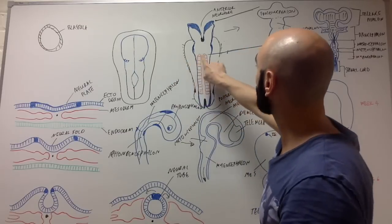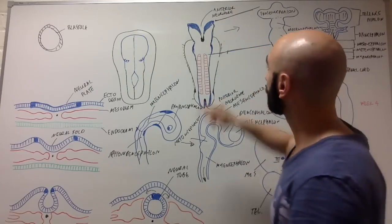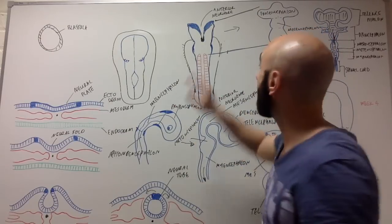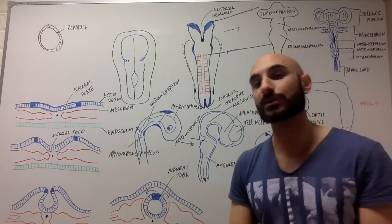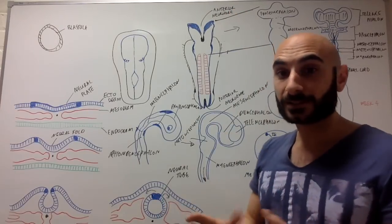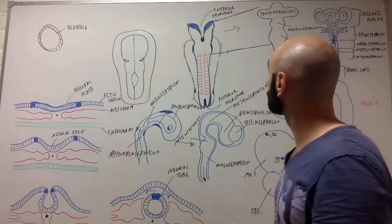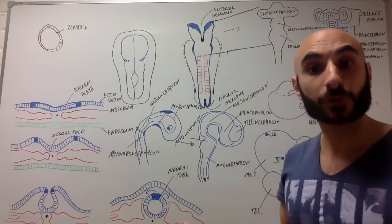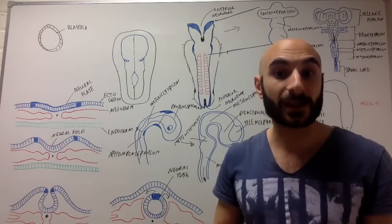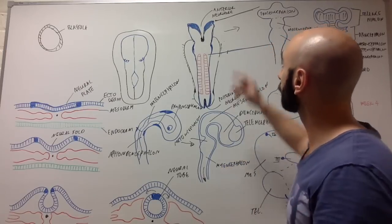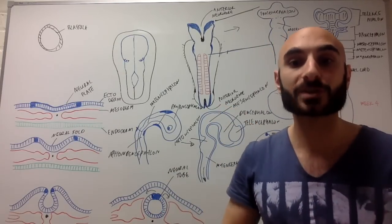Taking another snapshot a bit further along, you'll notice the folding has happened but both ends are still open. The top open end of the neural tube is called the anterior neuropore, and the bottom end is called the posterior neuropore. Failures of the anterior neuropore to close lead to things like anencephaly — upper neural tube defects — while failure of the posterior neuropore to close causes things like spina bifida or other lower neural tube defects. The anterior neuropore should ideally close by day 25, and the posterior neuropore by day 27.